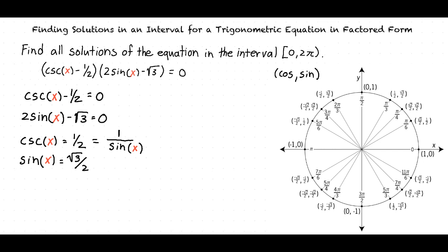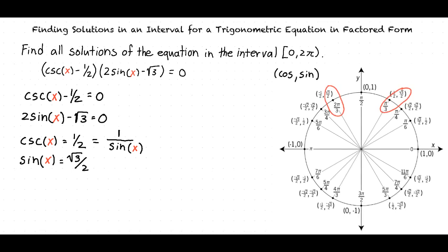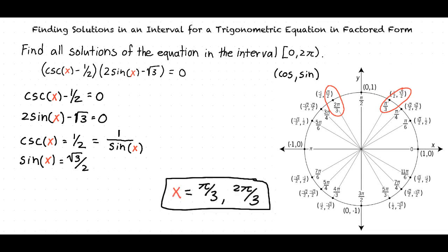Sine of x is equal to square root of 3 over 2 when x is equal to π over 3 and 2π over 3. So our solution to the equation is x equals π over 3 and 2π over 3.